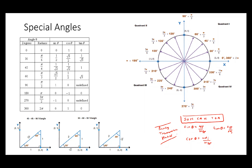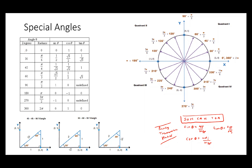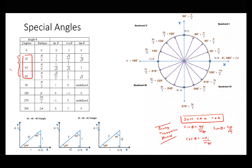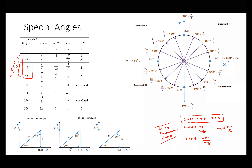There are certain angle measurements that give us exact values: 0, 30, 45, 60, 90, 180, 270, and 360 degrees. Some of these values you can determine by drawing out special triangles, but I want you to memorize these values. You can find them through a special triangle or through a unit circle.